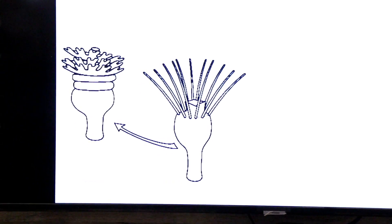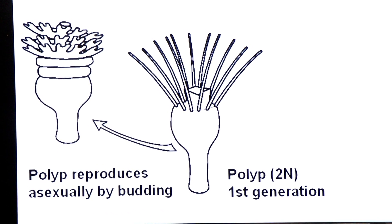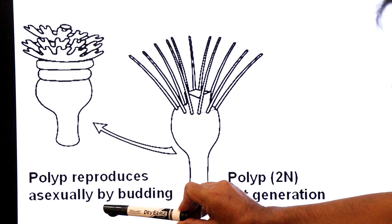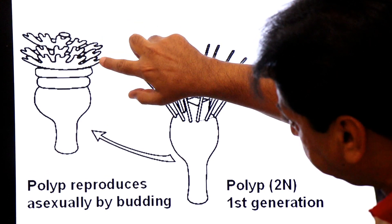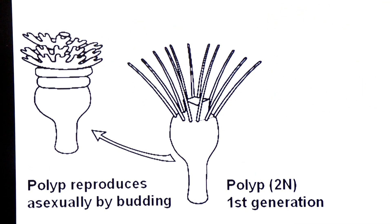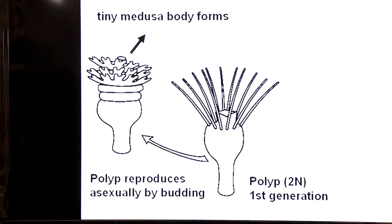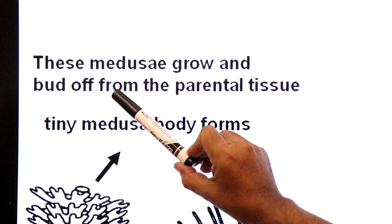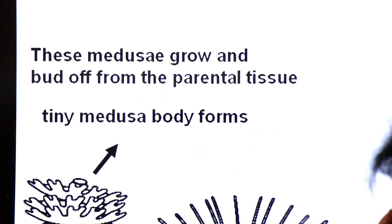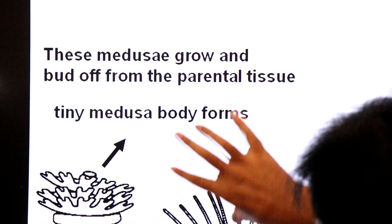In detail, the first generation is the polyp — a diploid stage. The polyp reproduces asexually by budding. Through budding, tiny medusa forms arise from the polyp body. These tiny medusae grow in size and then separate from the parental polyp body through budding from the parental tissue.